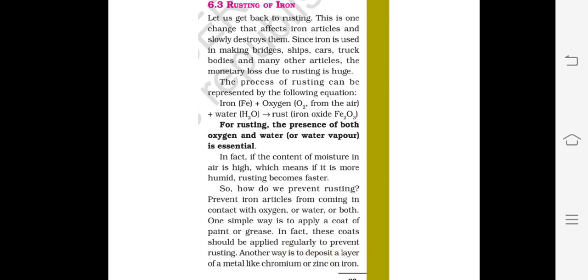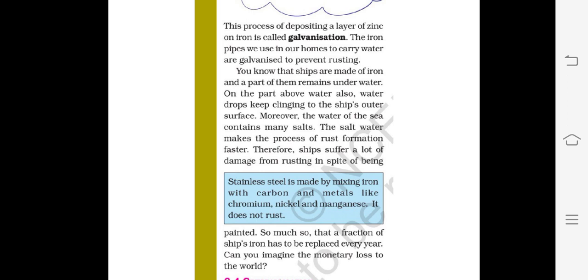Another way is to deposit a layer of a metal like chromium or zinc on iron. The process of depositing a layer of zinc on iron is called galvanization. The iron pipes we use at home to carry water are galvanized to prevent rusting — they have a zinc layer on them.